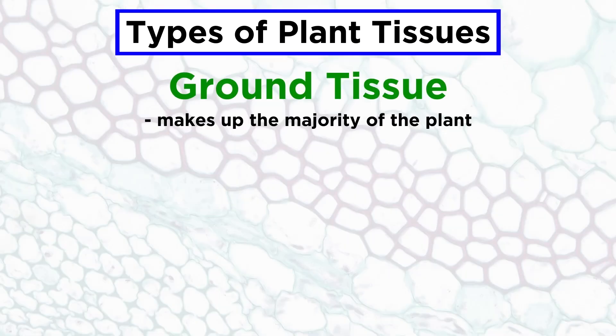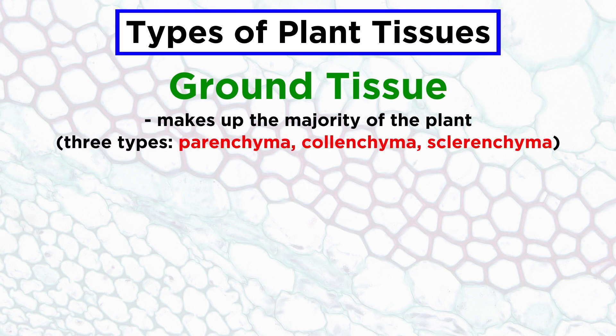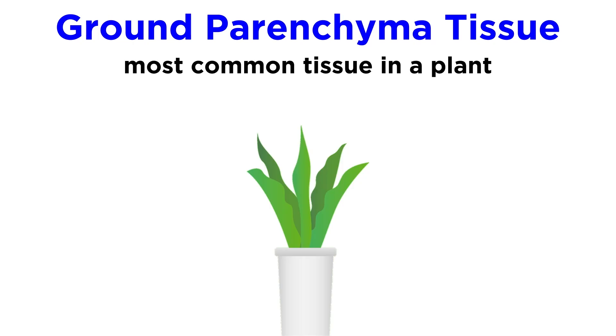First up, ground tissue makes up the majority of a plant's body, and it's broken up into three subgroups based on cell type. Those are the parenchyma, the calenchyma, and the sclerenchyma, which we just learned about. Ground parenchyma tissue is the most common tissue in a plant. It appears in a variety of locations and does many jobs.